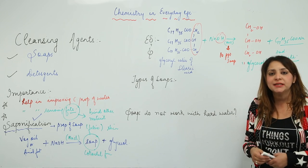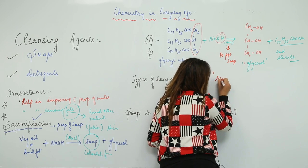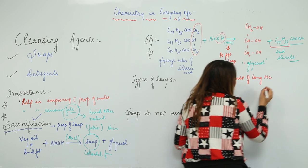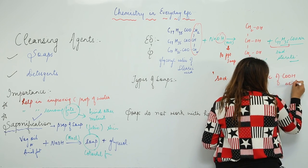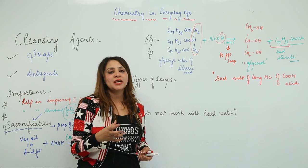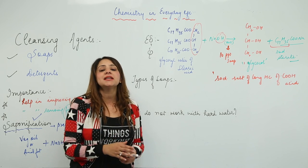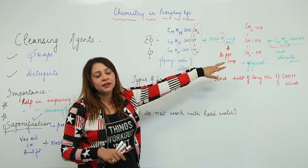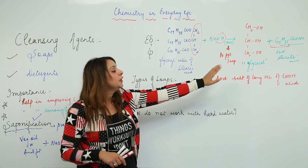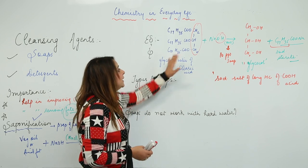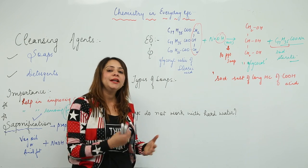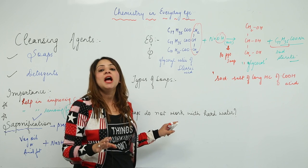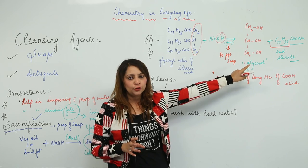By looking at the formula of sodium stearate, we can define what soap actually is. Soap is the sodium salt of a long hydrocarbon chain carboxylic acid. Whenever you see a compound which has a hydrocarbon part and -COONa, that is regarded as a soap. Depending upon what animal fat or vegetable oil you use in saponification, you can prepare different kinds of soaps. Now you know what soap is, what saponification is, how soap is formed, and you can identify soap by its basic molecular formula.